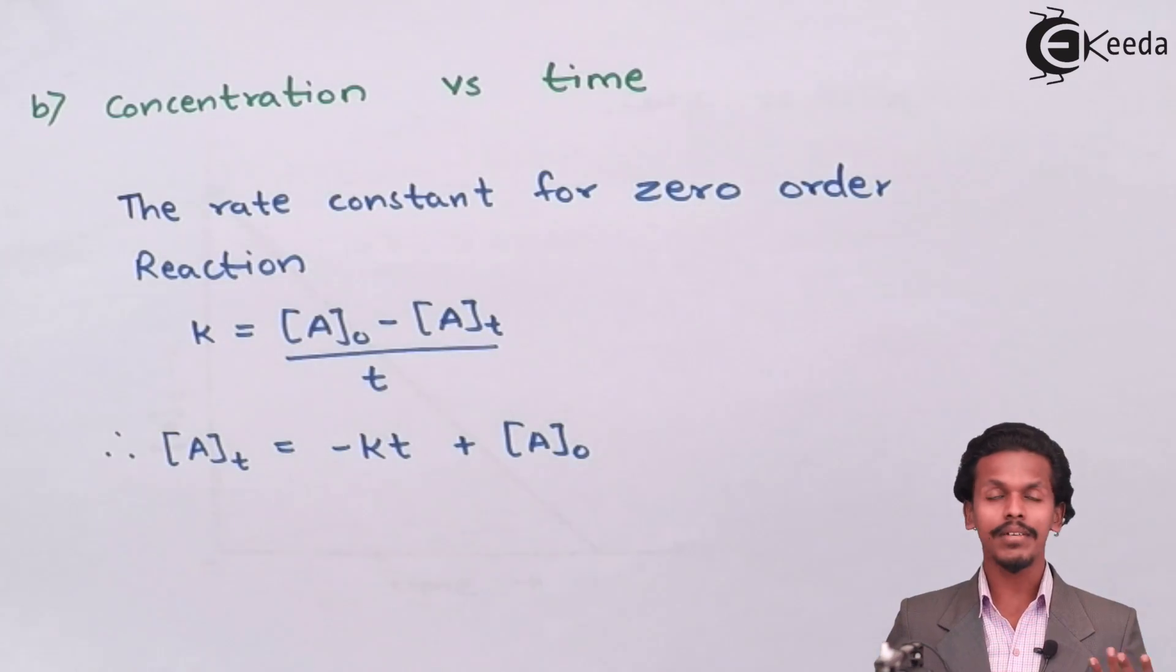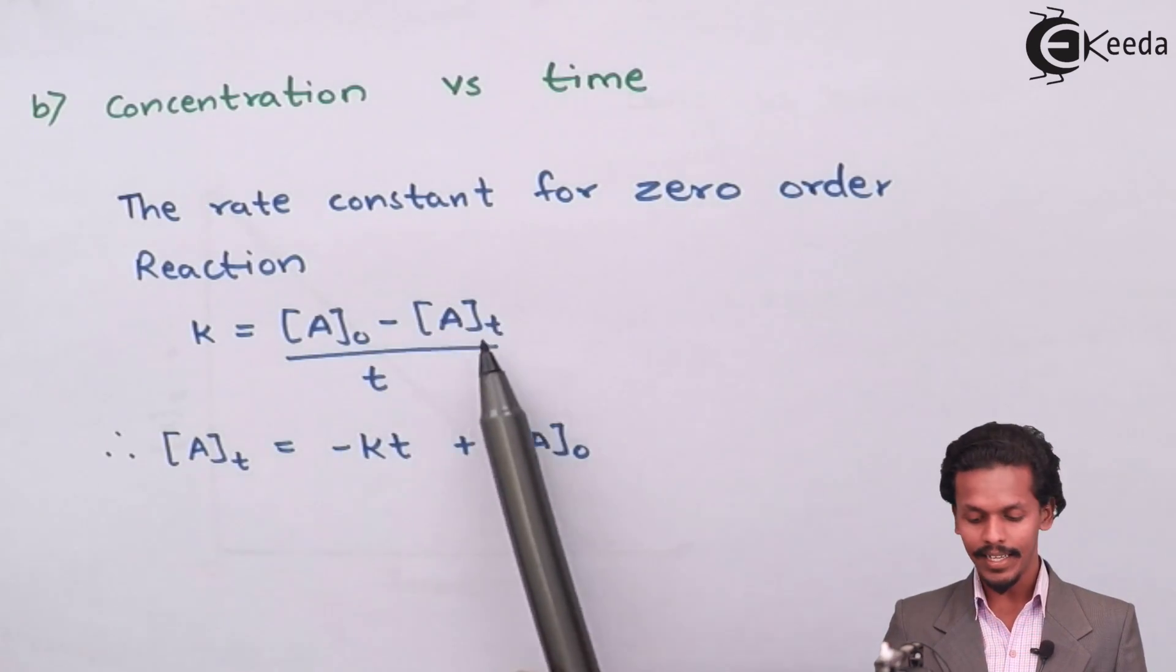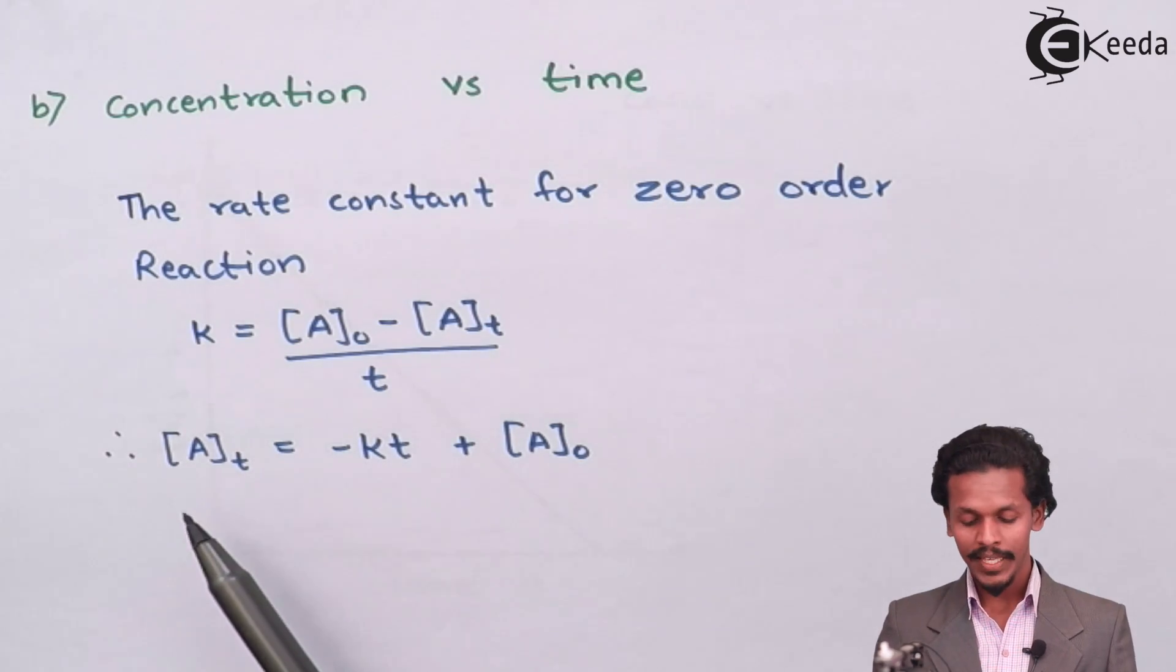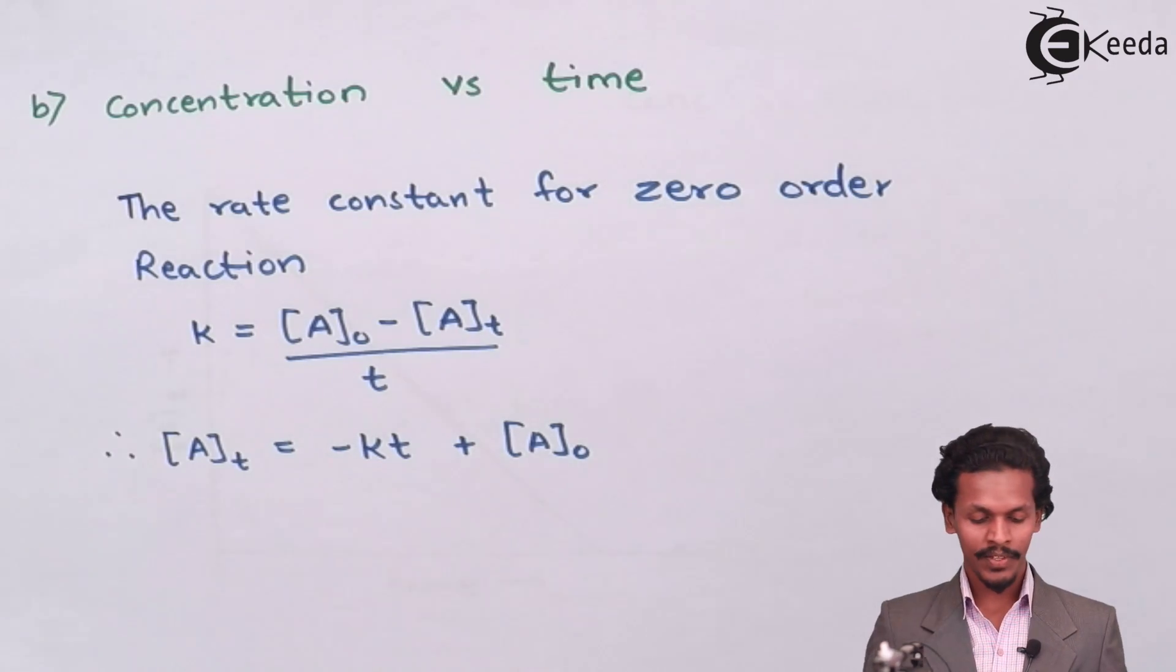Since we have derived an equation for the zero-order reaction as the rate constant k equals A0 minus At divided by t, that can be rearranged as At equals minus kt plus A0.